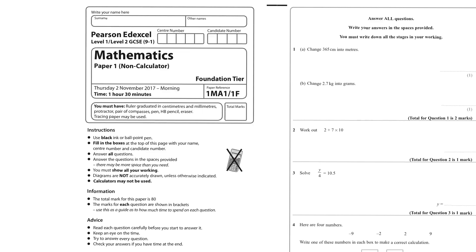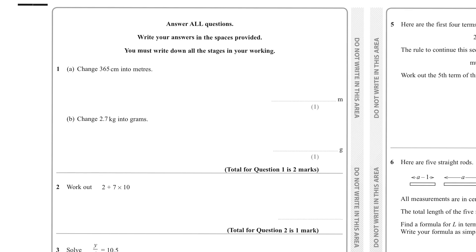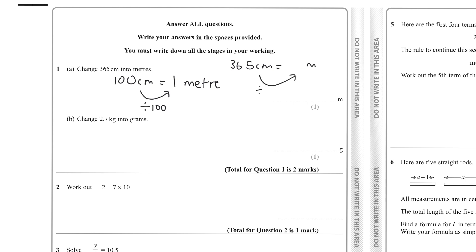The first question says change 365 centimetres into metres. If we know there are 100 centimetres in one metre, we divide by 100, which is the same as moving back two decimal places because 100 has two zeros. So the answer would be 3.65.